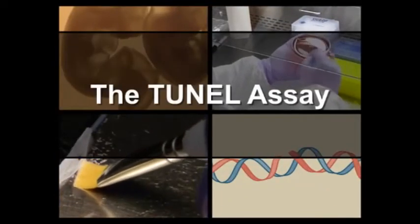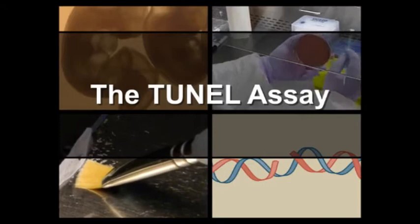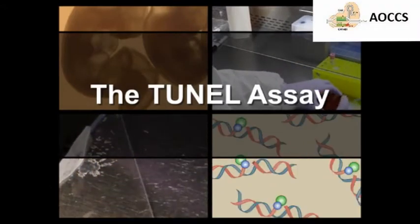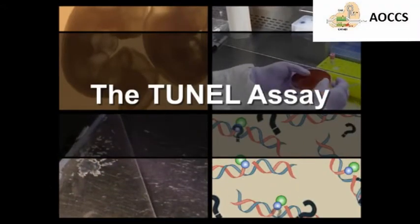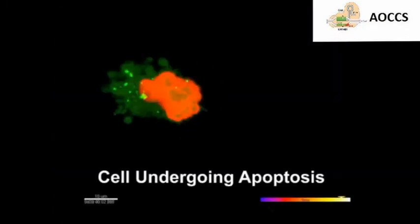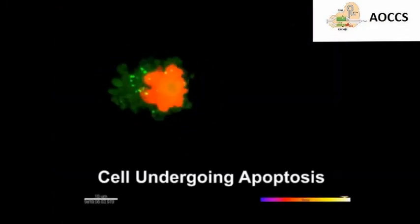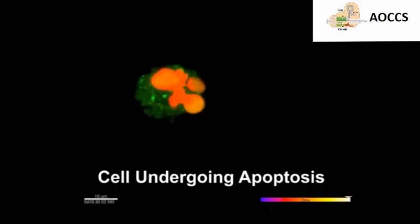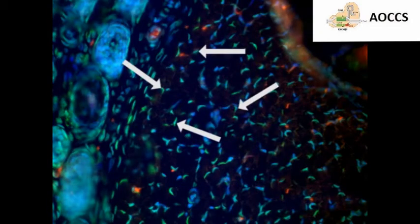The TUNEL assay is most commonly used to detect cells undergoing apoptosis, which is a form of programmed cell death. Apoptosis is an important biological process during development and for maintaining tissue homeostasis. TUNEL staining allows for visualization and quantification of apoptotic cells.